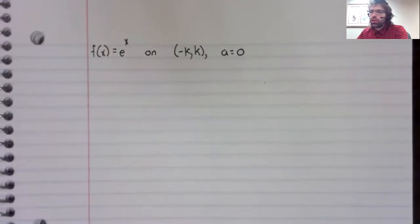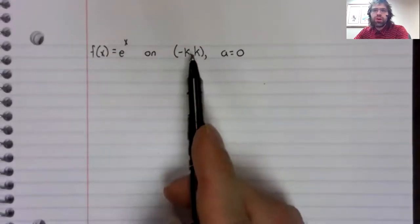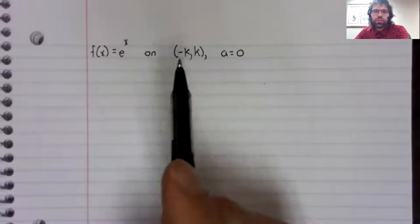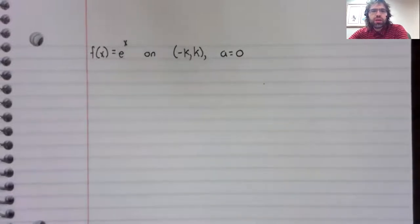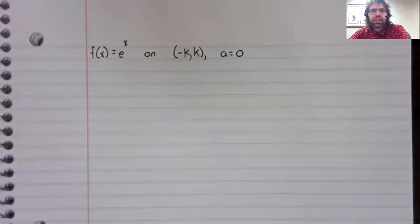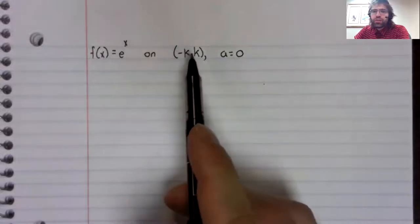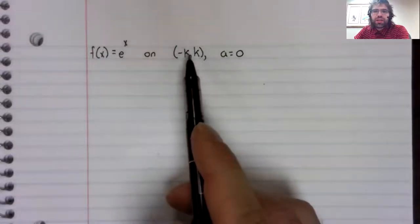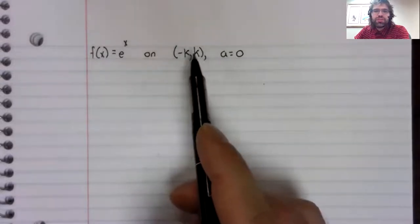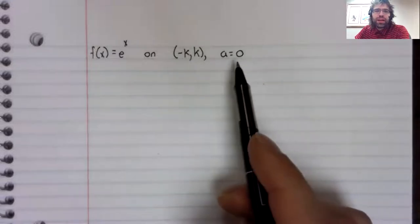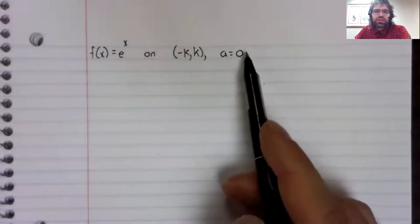Taylor's theorem works on intervals, so we'll start by looking at the exponential function on a finite interval. The interval we've decided will be centered at zero, and this is the Maclaurin series.